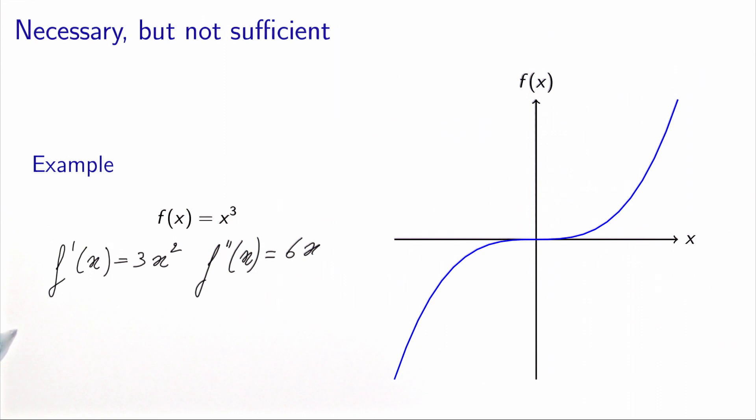It means that when x star is equal to zero, f prime of x star is equal to zero, f second of x star is also equal to zero, which means that it's greater or equal to zero.